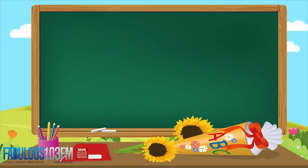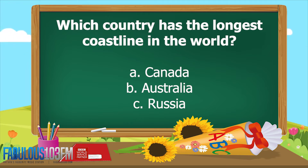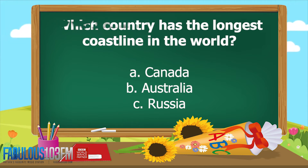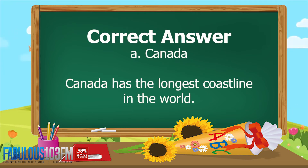The second question from Friday: which country has the longest coastline in the world? Is it a) Canada, b) Australia, or c) Russia? The correct answer is a) Canada. Canada has the longest coastline in the world.